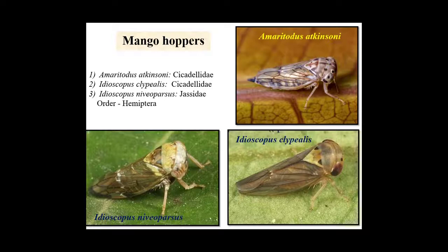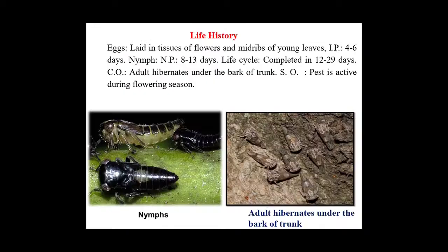Life cycle of mango hoppers: eggs are deposited in the tissues of flowers and midribs of young leaves. Nymphal period is 8 to 13 days and total life cycle completes in 12 to 29 days. Adults hibernate under the bark of the trunk. This pest is mainly active during the flowering season.